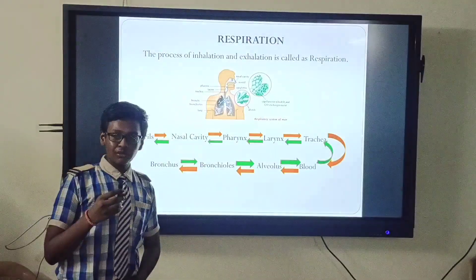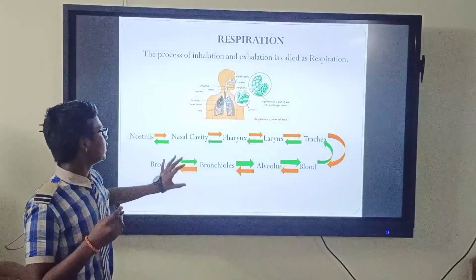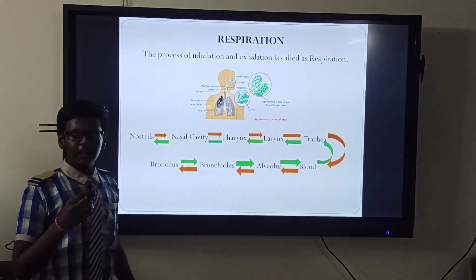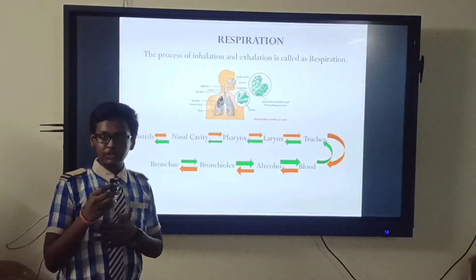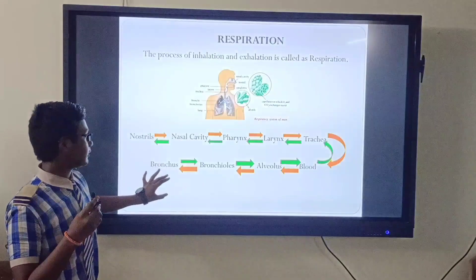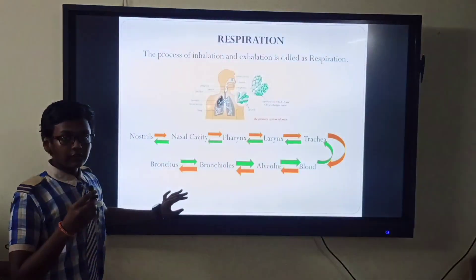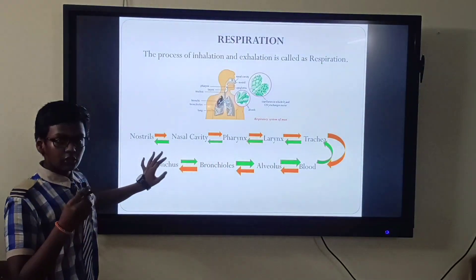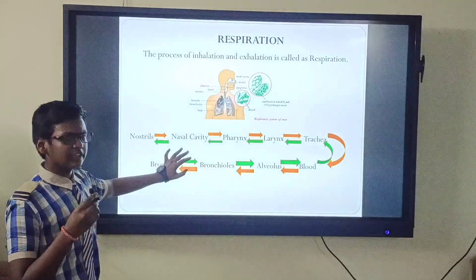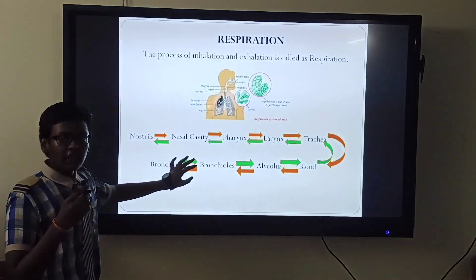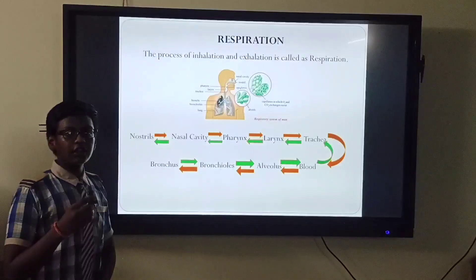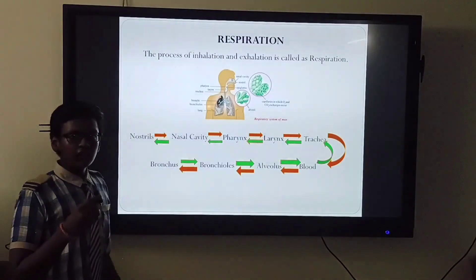Today I would like to tell you about the pathway of air. Air enters into our body through nostrils and blood, and there are many parts between nostrils and blood. First, the nostrils — air enters into our body through the nostrils. Next, air enters into the nasal cavity, where air gets filtered, its temperature becomes more close to that of our body, and it becomes more moist than before.